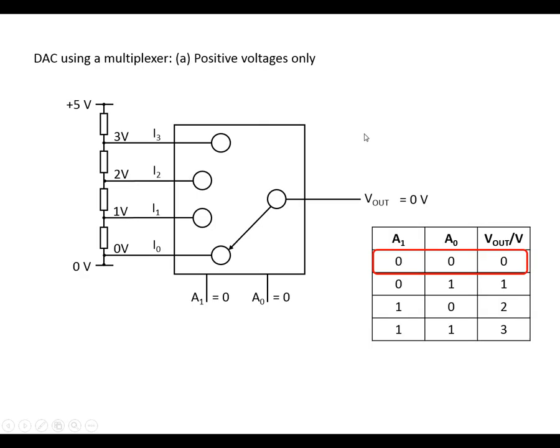Using a multiplexer, in many ways it's simpler. We just need a resistor chain to set the voltages that we want at the output. And we use the digital input coming in here to the address of the multiplexer. So if the input is 0, 0, the output's 0 volts.